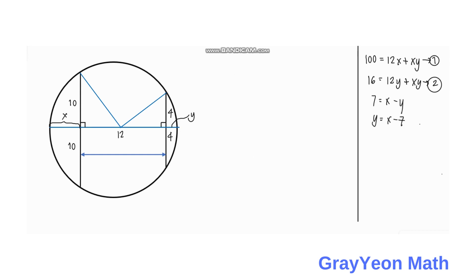Knowing Y as X minus 7, we can simply replace this Y by X minus 7. We can again apply the cross chord theorem for the right chord and the diameter. We have 4 times 4 again is equal to X plus 12 multiplied by X minus 7.